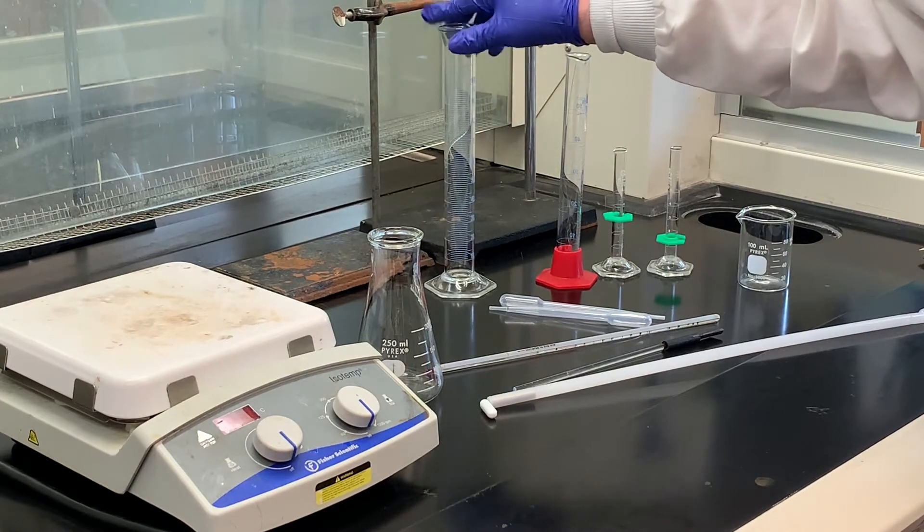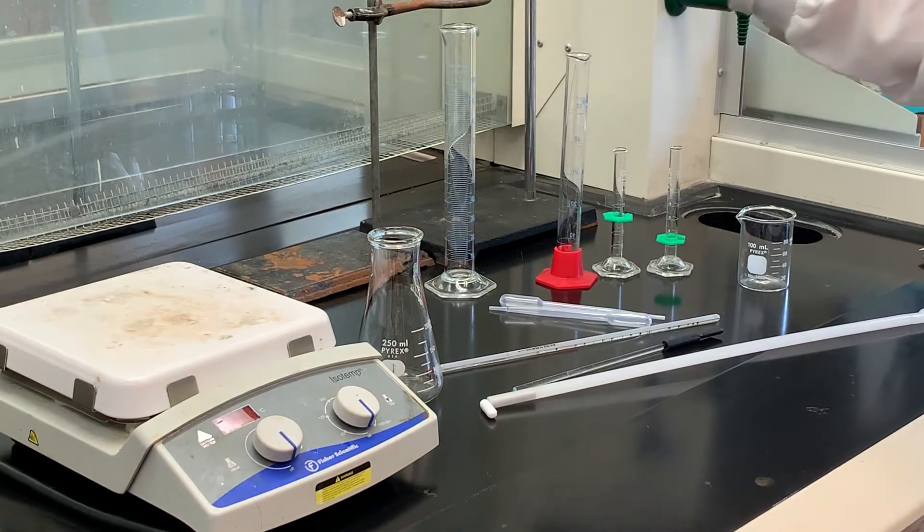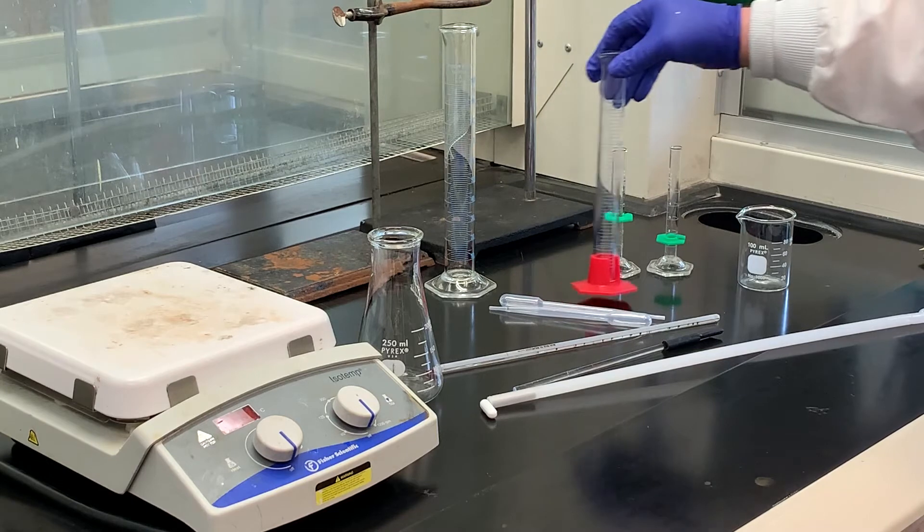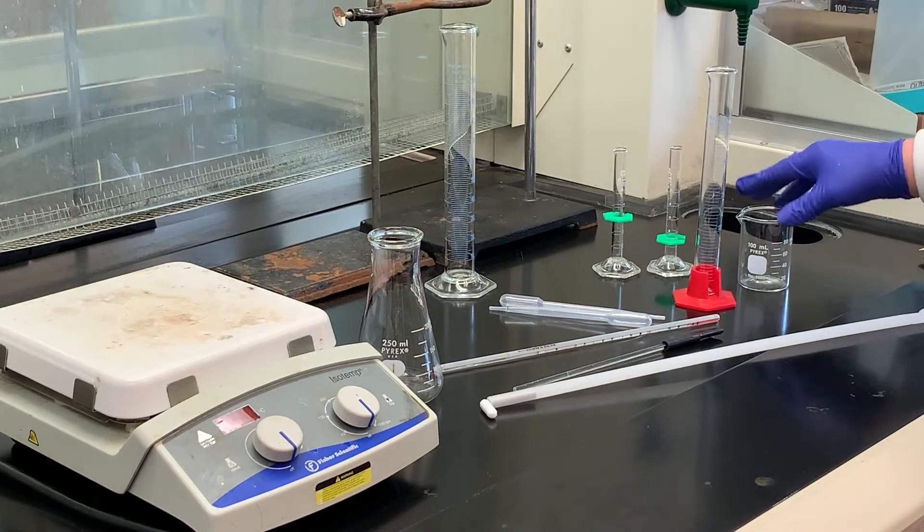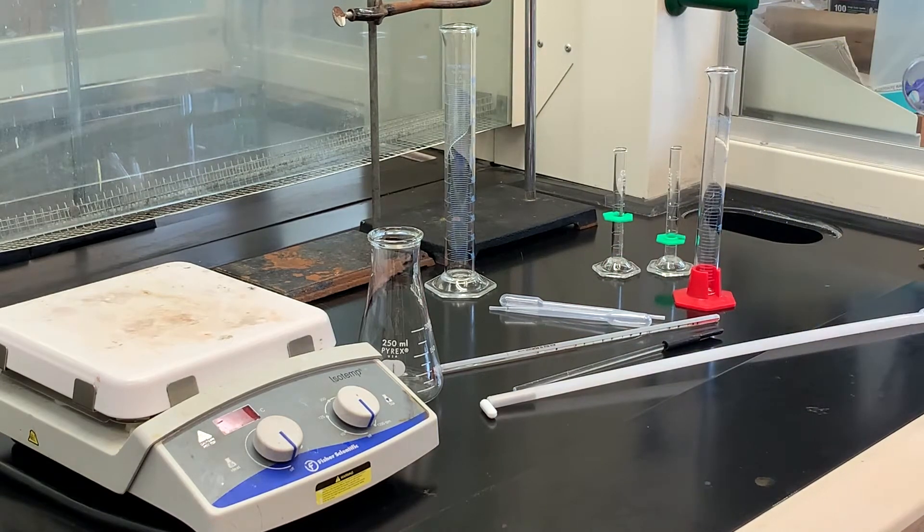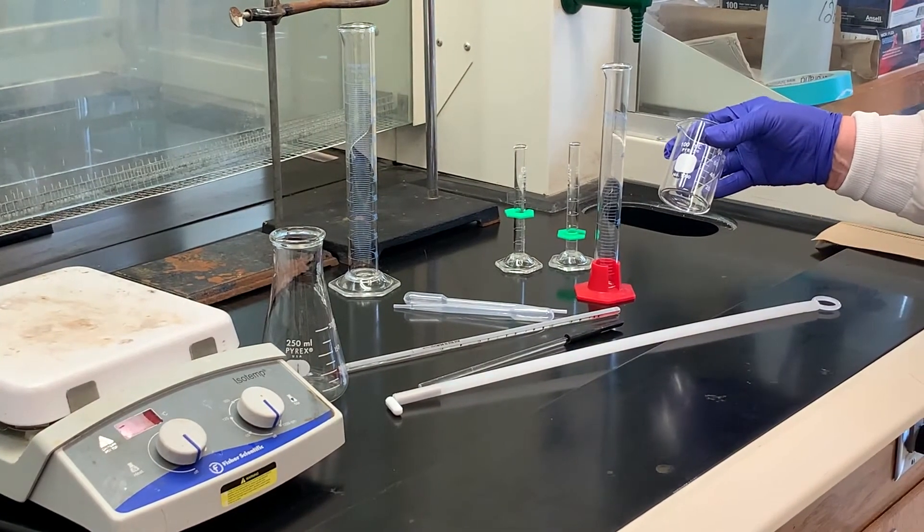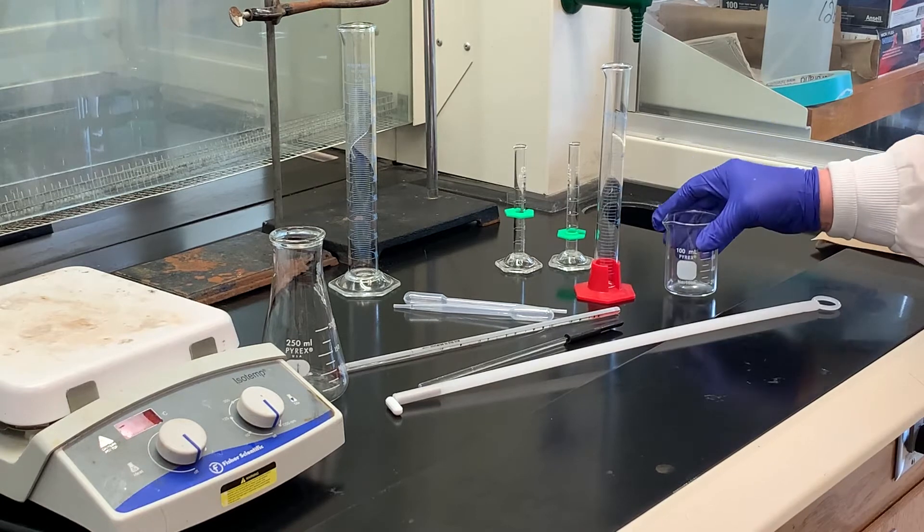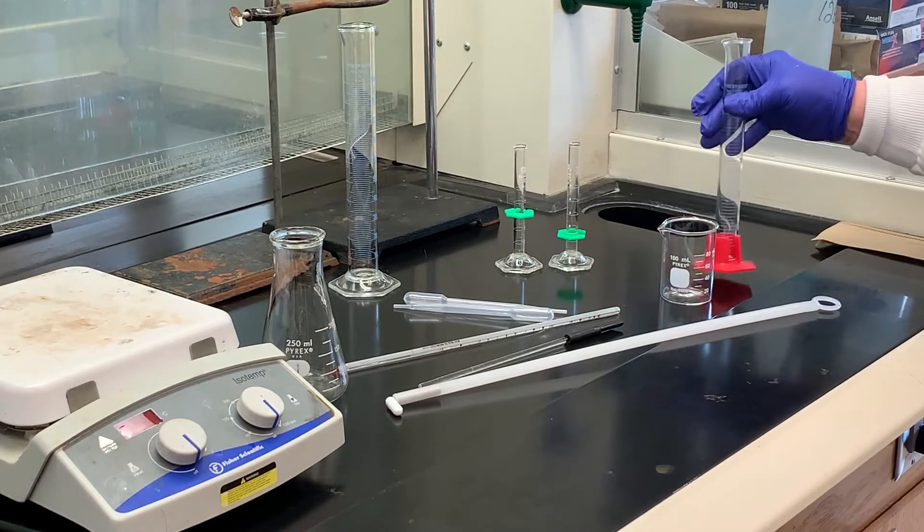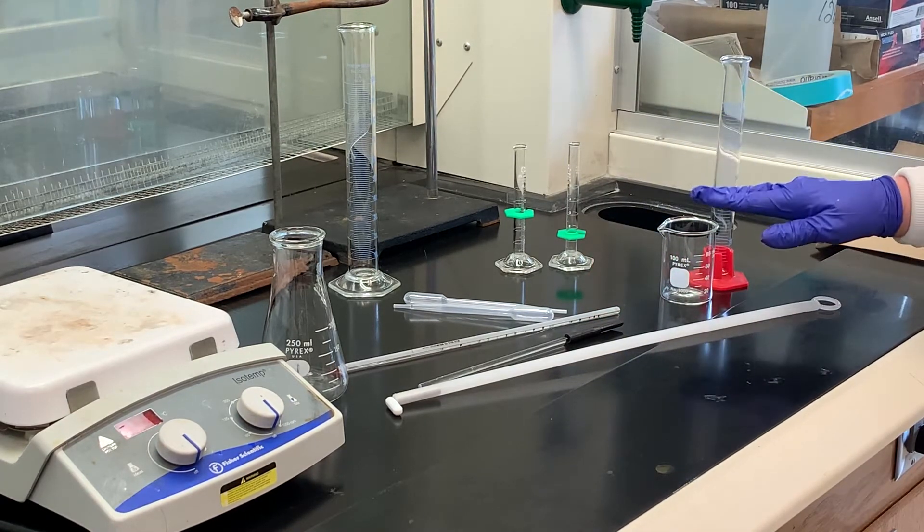We'll measure out 100 mils of the 0.4 molar HCl. To make the sodium acetate trihydrate solution, I would just use a beaker, maybe a 100 milliliter beaker, and then you're going to measure out 6 grams of the sodium acetate trihydrate, and to that add 20 milliliters of distilled water and then stir that.